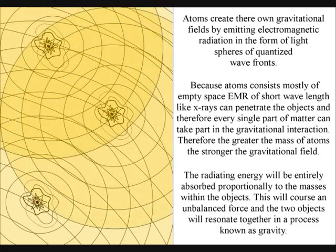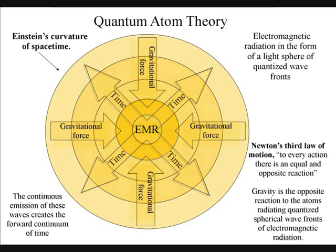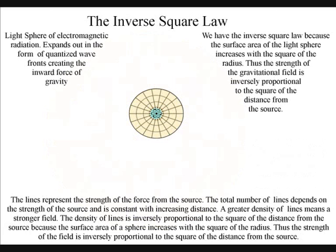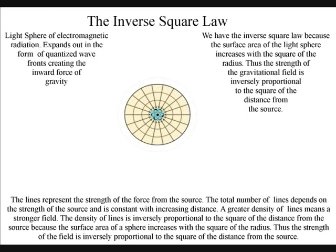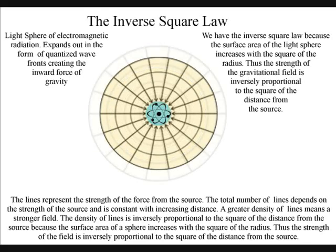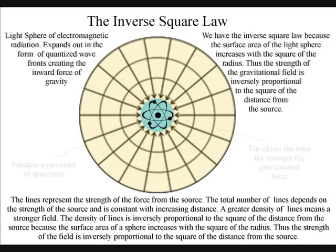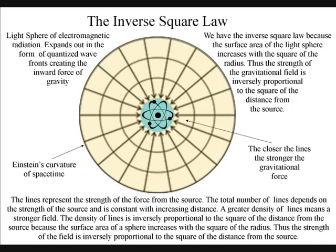The gravitational field will propagate at the same speed that electromagnetic radiation moves, the speed of light. Therefore, there is no instantaneous action at a distance. We have the inverse square law because the surface area of the light sphere increases with the square of the radius. Thus, the strength of the gravitational field is inversely proportional to the square of the distance from the source.